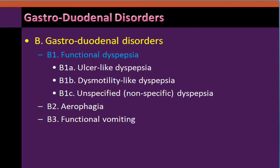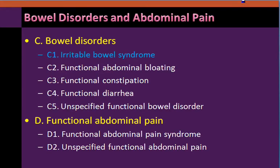Aerophagia and functional vomiting are two other functional disorders of the gastroduodenal region which we are not going to consider in this CME. The bowel disorders and abdominal pain — functional bowel disorders and functional abdominal pain — are classified as C and D. Out of the functional bowel disorders of the intestines, irritable bowel syndrome, also commonly called IBS, will be our focus in the CME along with functional dyspepsia.